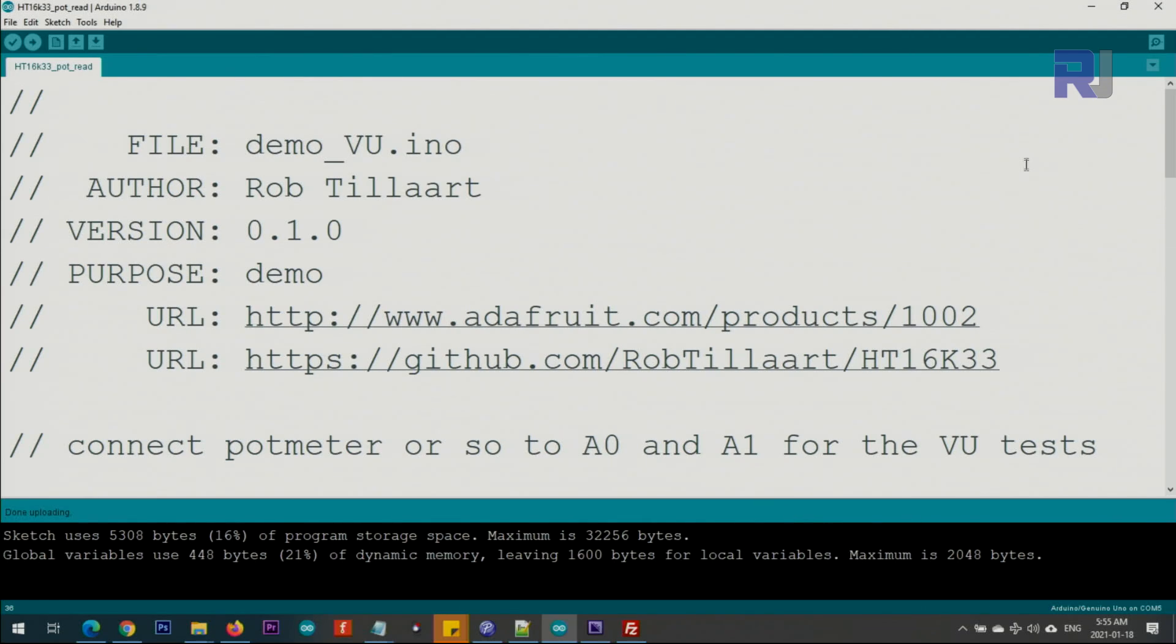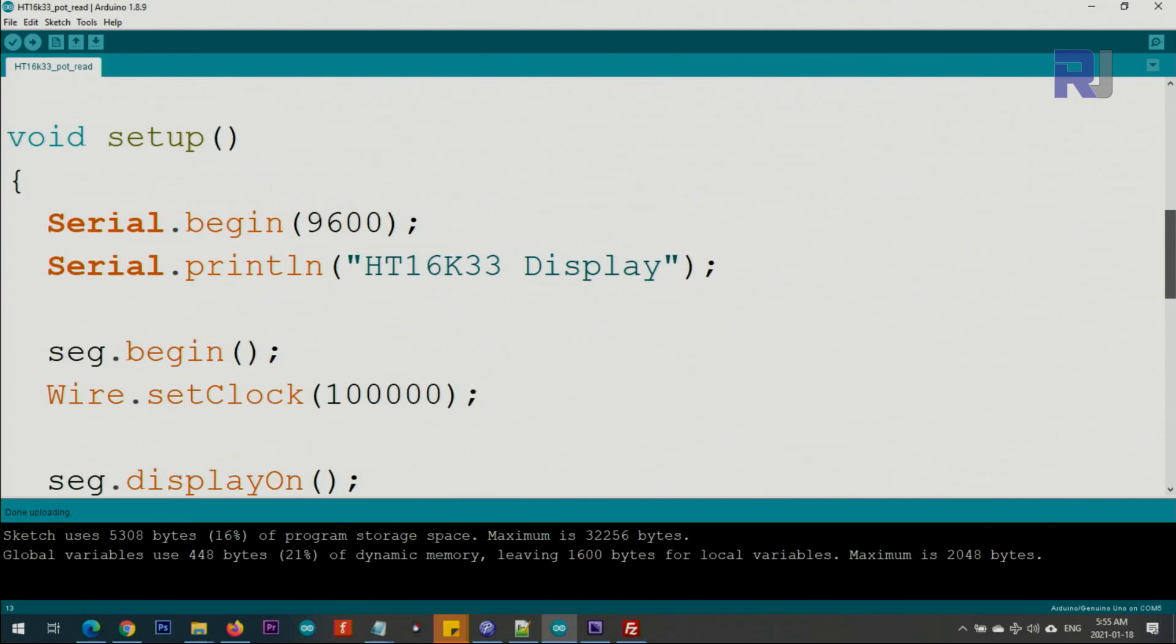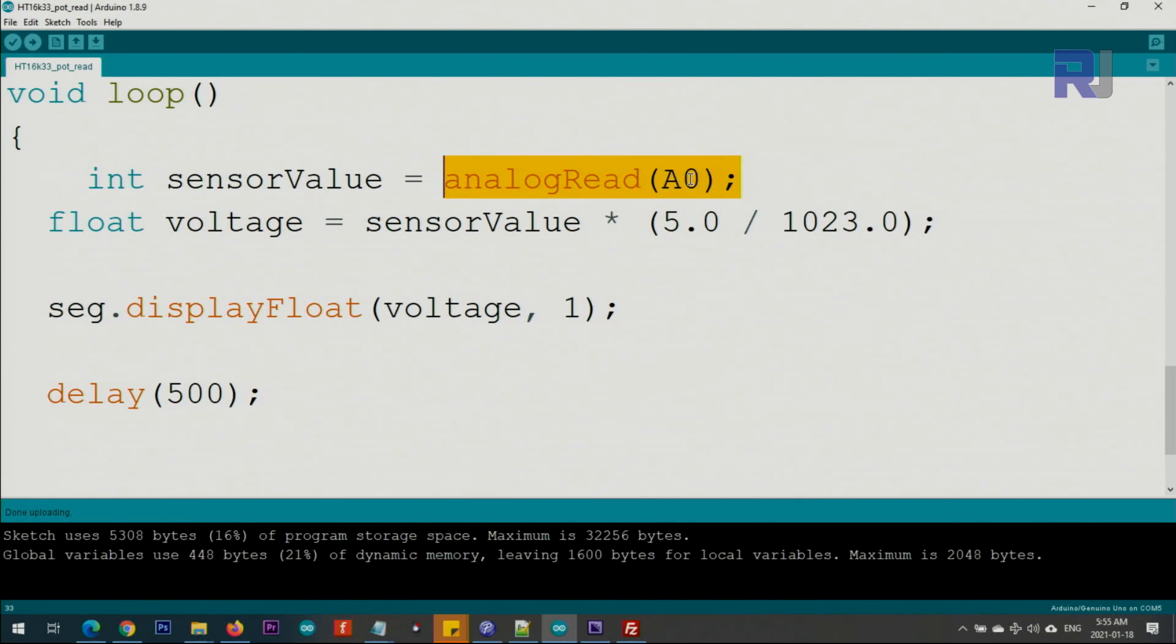And here's the code for how to read the potentiometer. We define this object as I mentioned before. We read the analog zero pin, the value is stored here in sensor value, and then we get the same sensor value multiplied by 5 volts divided by 1023. The calculation gives us a voltage. Here we say print voltage using displayFloat with one decimal place. If you want two or three decimal places, just change that. This 500 milliseconds is the delay. If you want to display it faster with faster refresh rate, reduce this number, for example make it 50 or a little more.